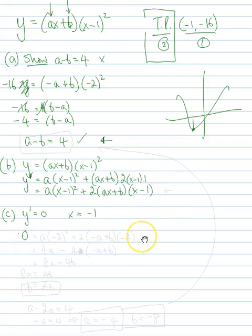So zero equals a times, this is the function that we're substituting into, x take 1 squared, so minus 2 squared plus 2 times, we're going to leave the a's and the b's in there, negative a plus b times negative 2. Which equals negative 2 squared is 4a, and we've got minus 4 on this side times negative a plus b. Multiply it all out and we get 4a minus 4 there, 4a plus 4a, so it's 8a, minus 4b. Bring the 4b over to the other side, so 8a equals 4b, and b equals 2a.